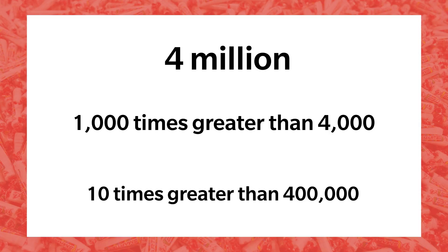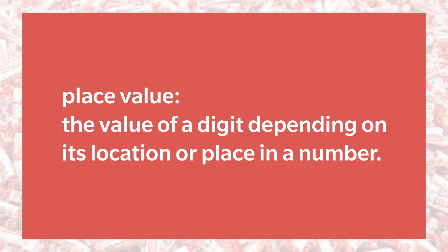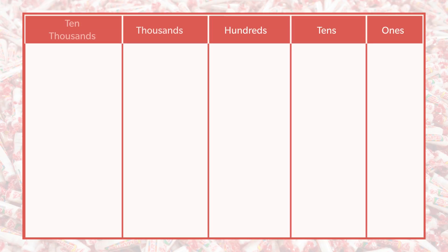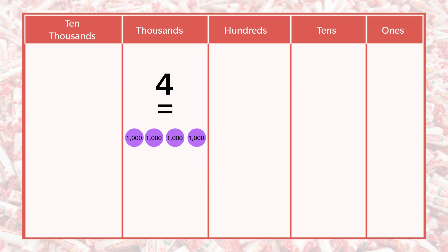Let's do an example now. We already know that the value of a digit changes depending on its location or place in a number. As the number 4 changes its location within this place value chart, its value changes too. When 4 appears in the thousands place, the digit doesn't represent the value 4 — it represents a value of 4,000. Using number disks and a place value chart can help us better understand this concept. Using these tools, we could represent 4,000 in a few ways.